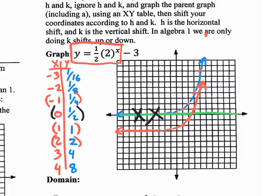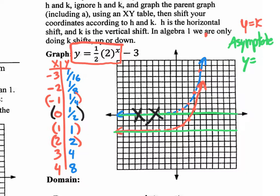In addition to graphing, you also need to state all the different information about it — like what is the new asymptote of your actual final graph? It's not y equals 0 anymore. It now approaches negative 3. It'll never actually get to negative 3, but it'll infinitely approach negative 3. So your new asymptote got shifted three units down. On our notes, we said the asymptote will be y equals k. The k value is negative 3, so your new asymptote is y equals negative 3. You don't have to memorize y equals k because you can clearly see your graph infinitely approaches negative 3 but never actually gets there.